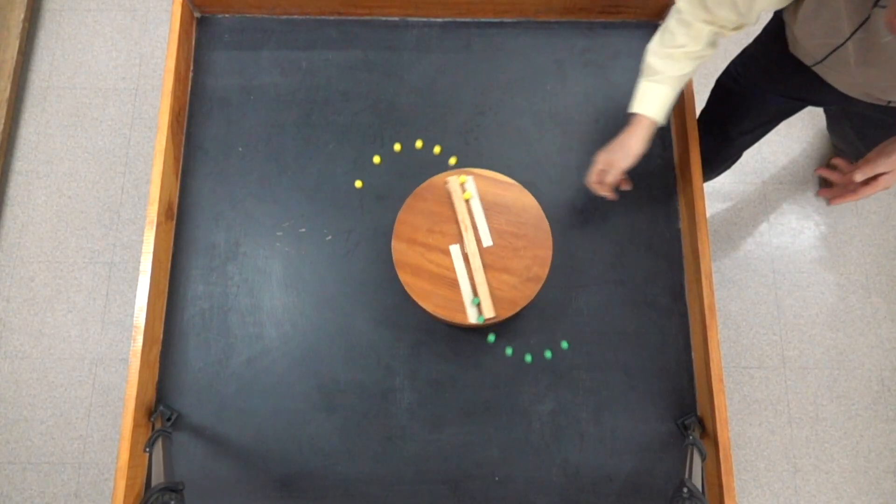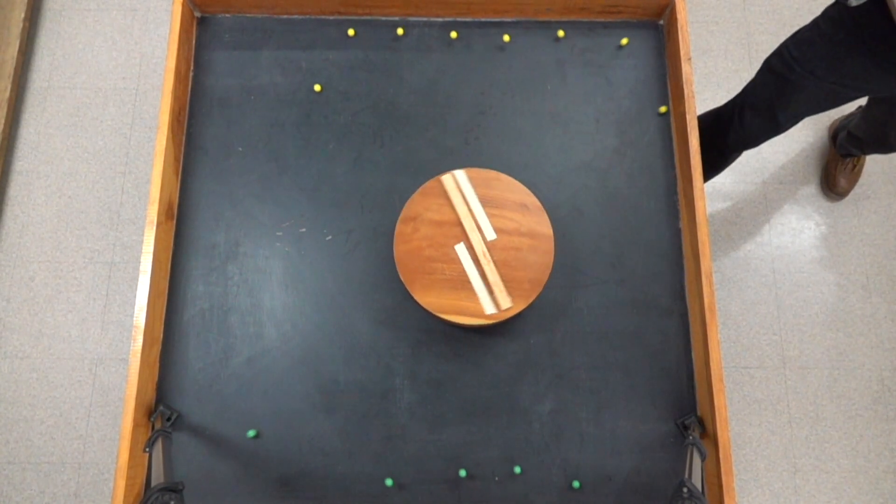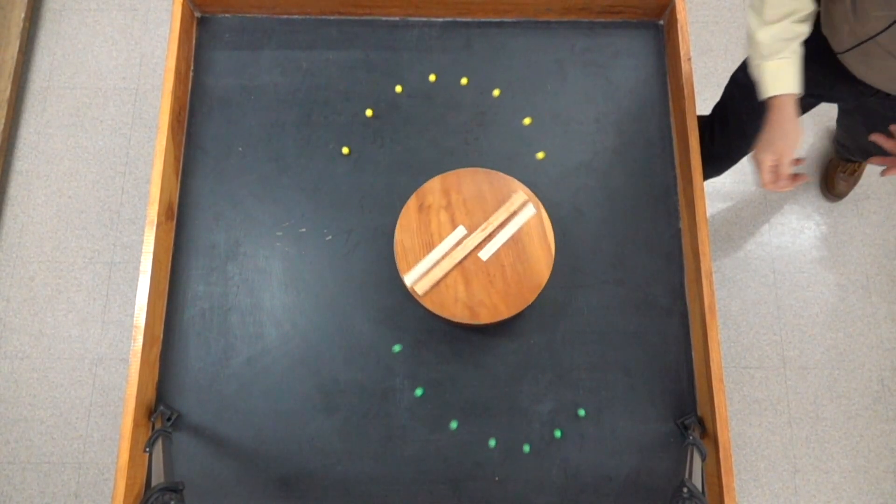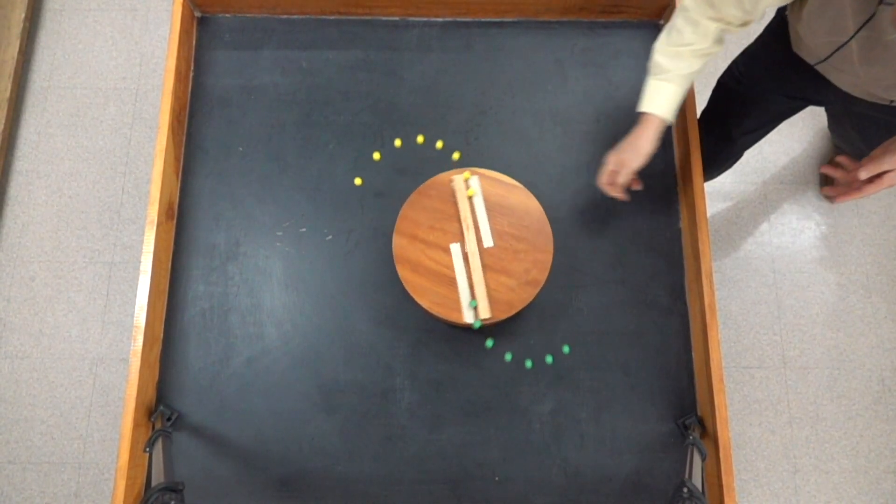Here in slow motion we can see that same behavior. Once free of the spinner, there's no centripetal force acting on each marble, so they move in a straight line due to inertia.